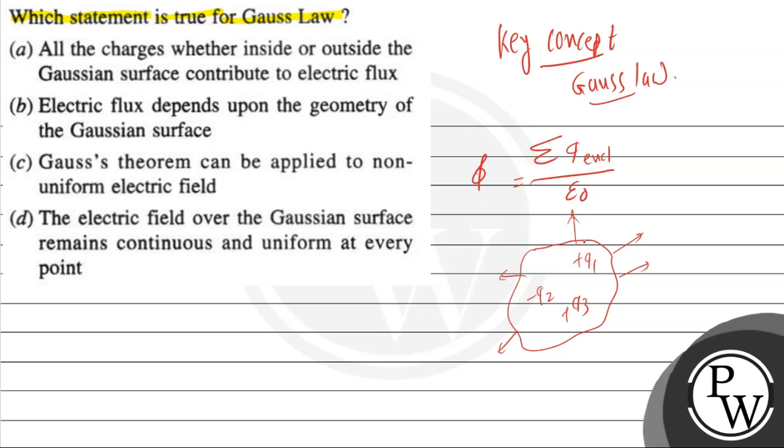It is distributed over the electric field and we can find it. So we have asked that Gauss law, which option is correct. So in the option there is one: all charges whether inside or outside Gauss surface contribute to the electric flux. No, according to this formula, the inside charge is what we have to take—Q enclosed. So the first option is not able to explain the proper answer.